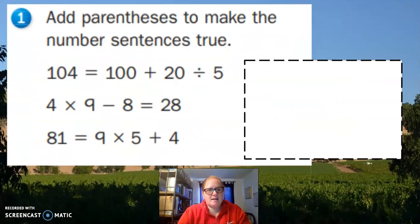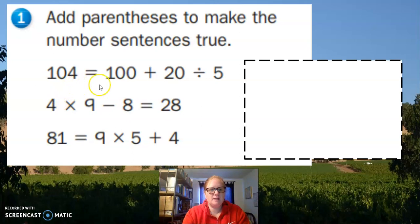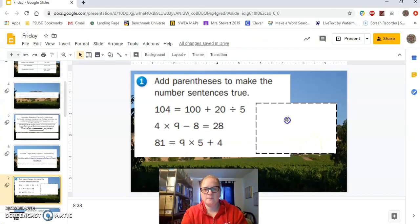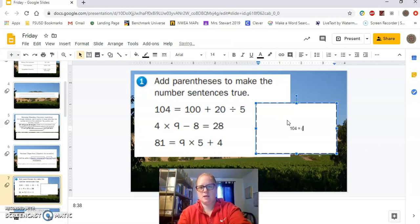So for this math box, it says add parentheses to make the number sentences true. 104 = 100 + 20 ÷ 5. Where do the parentheses go? And so in this box is where I want your answer and how I want your answer is like this. You will write 104 =, and then you'd put in the parentheses if you think it goes here, (100 + 20) ÷ 5.